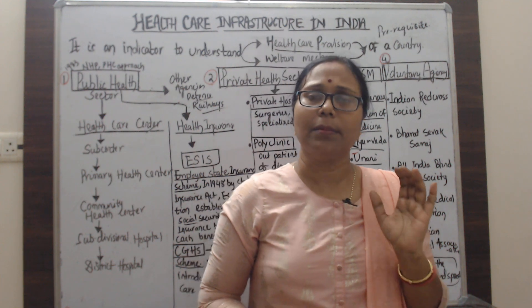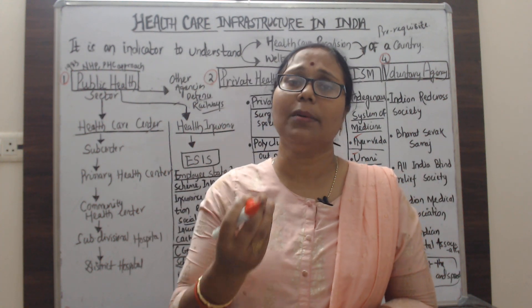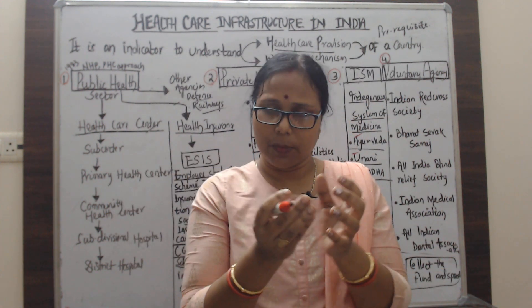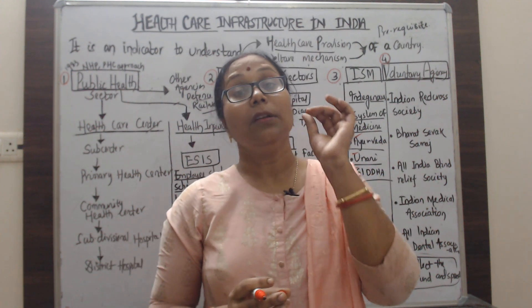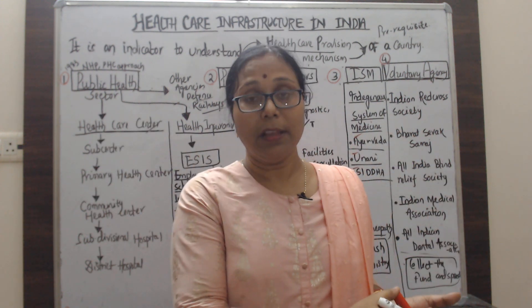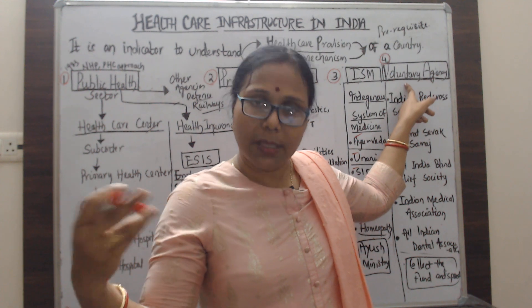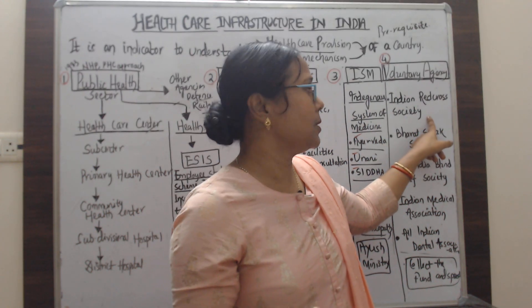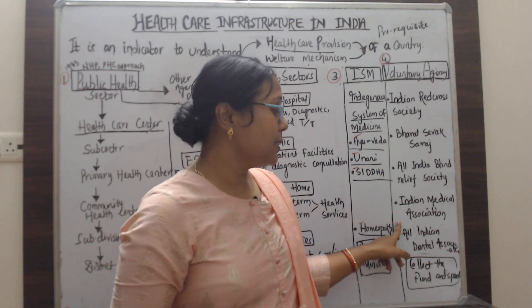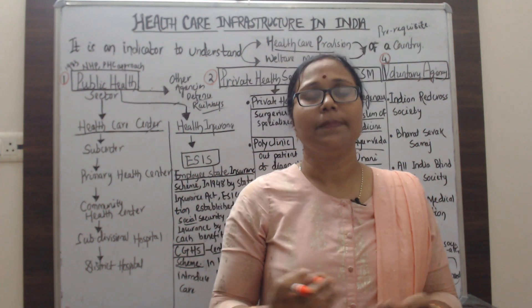Another sector is voluntary agencies. In India, a number of health programs are ongoing — such as malaria control, blindness control, and AIDS control programs. Some programs are sponsored by the central government, some by both central and state governments. Voluntary organizations receive this fund and spend the money for people who need care. Examples include the Indian Red Cross Society, All India Blind Relief Society, Indian Medical Association, and All India Dental Association.